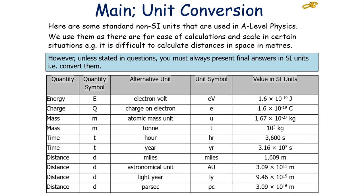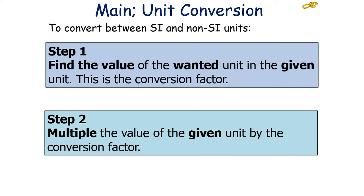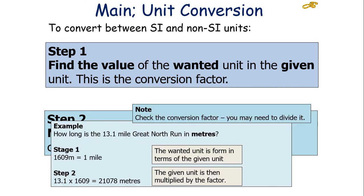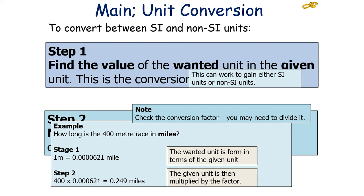What you've got to be able to do is, unless stating the question, you've always got to present your final answer in SI units. You've got to convert them. To convert between SI units and non-SI units, in the first step, you find the value of the wanted unit in the given unit, which is the conversion factor, and then you multiply the value of the given unit by this conversion factor. For example, how long is the 13.1 mile Great North run in metres? The first stage is find out how many metres are in a mile. You then multiply the number of miles by how many metres are in one mile, and that gives you your answer of 21,078 metres. Another example could be, how long is the 400 metre race in miles? You find out how much one metre is in miles, and you then multiply the number of metres by how many miles are in one metre, and you get your answer to be 0.249 miles.